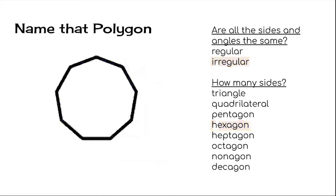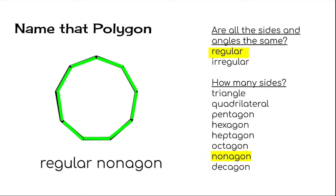Here's another one. Our first question is: are all the sides and angles the same? They are — so this one is a regular polygon. And now we have to count up the sides. You count while I keep track. How many sides were there? That's right — there were nine sides. And so we call this shape a nonagon. Good job — this one is a regular nonagon.